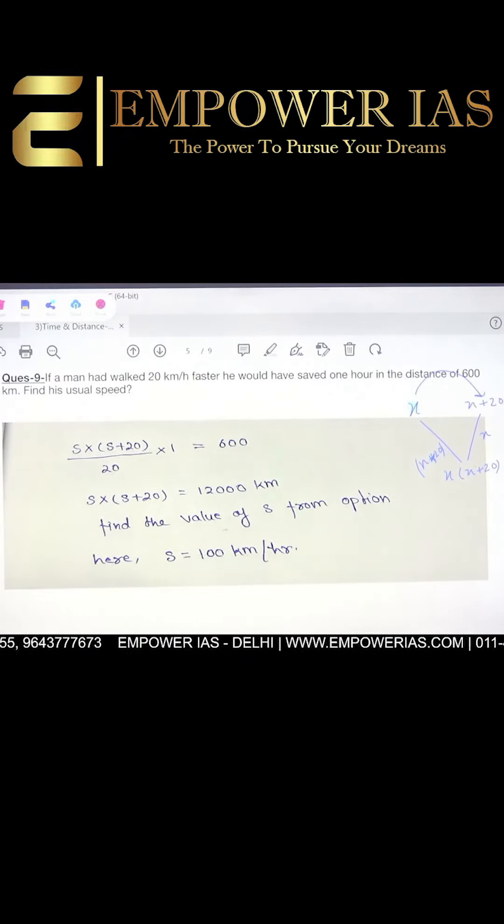Now see, if a man had walked 20 kilometers per hour faster, he would have saved one hour in a distance of 600 kilometers. So here see, this distance is given to be one equation, and another equation is he is going to save one hour time.